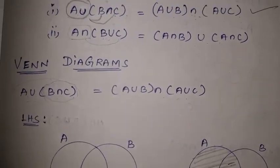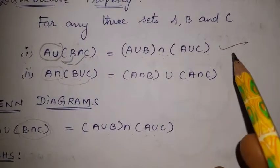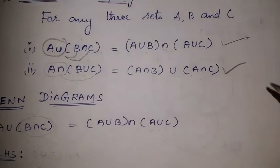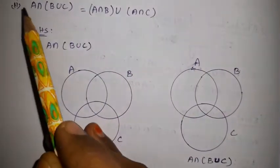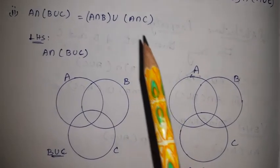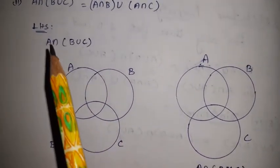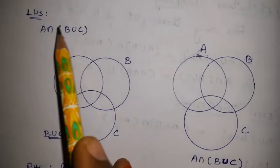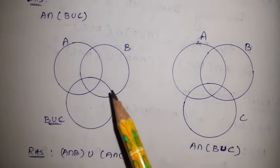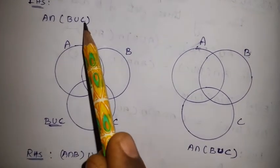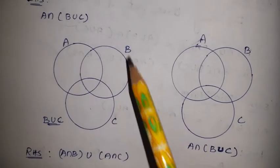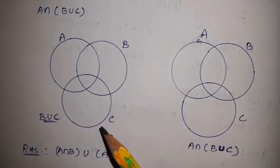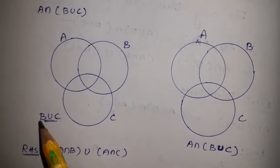The right hand side is verified to be equal to the left hand side. Note: this property is sometimes called the associative property. Now for the second property: A intersection (B union C) equals (A intersection B) union (A intersection C). We verify this with a Venn diagram. The left hand side is A intersection (B union C). First, we solve the bracket: B union C — the first diagram.